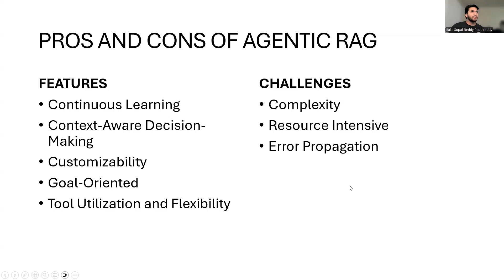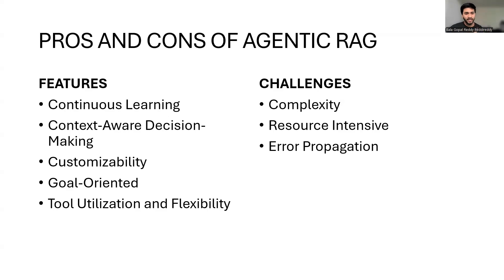Here are some of the challenges. Complexity — the architecture is a little more complex compared to the traditional case. Resource intensive — since there are so many interactions happening, it needs more computational power. And error propagation — if an agent makes a mistake at one step, that error will be propagated to the next steps until the orchestrator or verifier checks and rectifies it. This takes longer, and that is one of the key challenges for Agentic RAG.